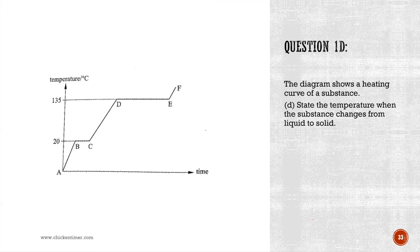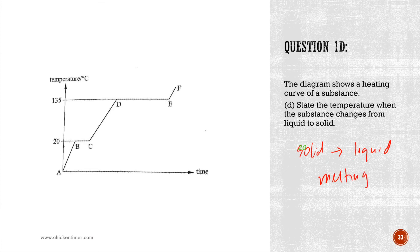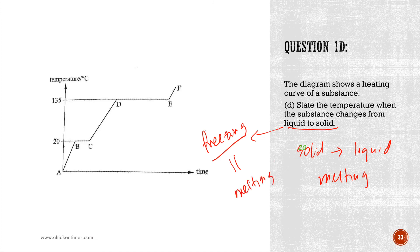The question asks: state the temperature where the substance changes from liquid to solid state. On a heating curve, the process of solid to liquid is melting, while liquid to solid is freezing. Freezing happens at the same temperature as melting, so if you have the melting temperature from the graph, that is also the freezing temperature.